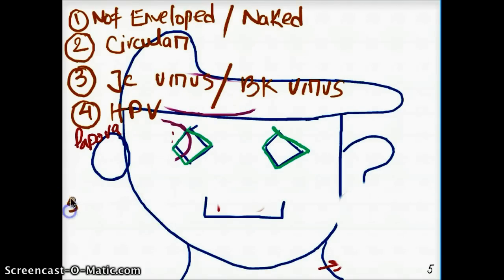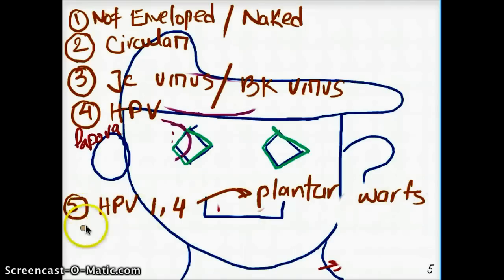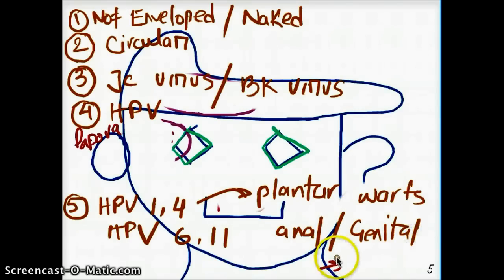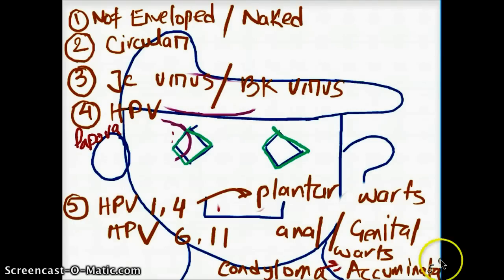Some other things that we need to know is which of the HPV virus causes what. Now, HPV 1 and 4 is going to cause plantar warts or warts in the legs. HPV 6 and 11 is going to cause anal or genital warts. Another name for them is condyloma acuminata. The one that causes cervical cancer is going to be 16, 18, those variations of the HPV virus.